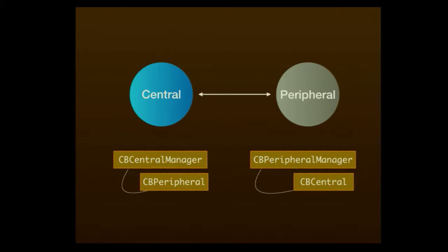In Core Bluetooth, there's an object called a CBPeripheralManager. This is what you use to set up the data and data structures that you want to advertise to another central device. On the central side, you have the CBCentralManager, which is scanning all the time to see what other peripheral devices are out there. This really is the thing that starts off any kind of communication between two Bluetooth LE devices. When you start looking at the Core Bluetooth implementation and APIs, this is the place where you will start.